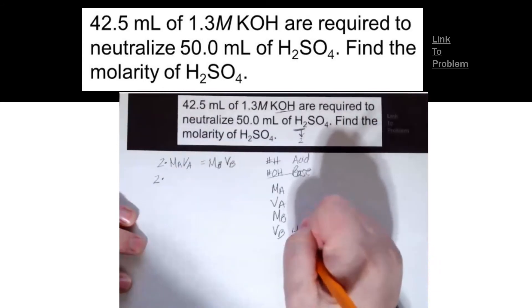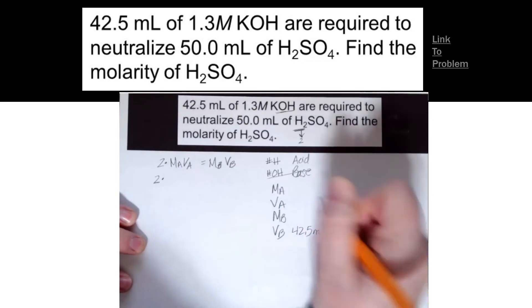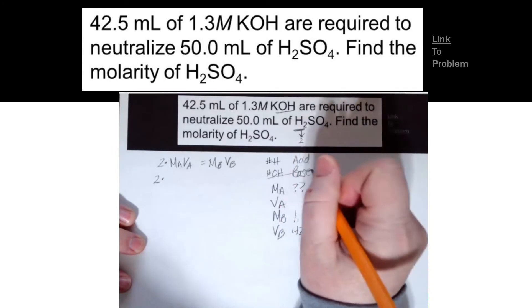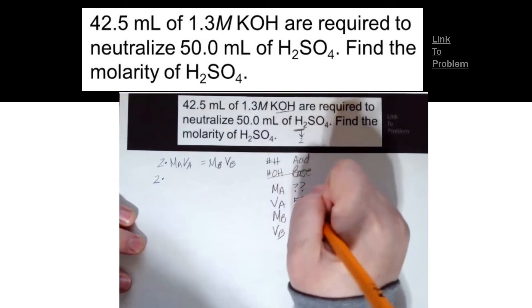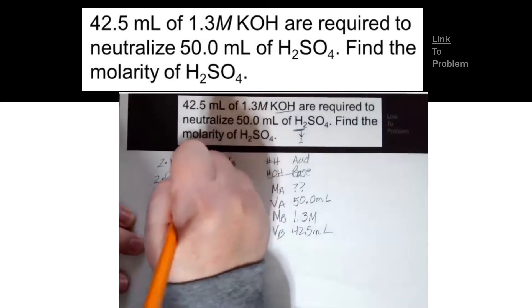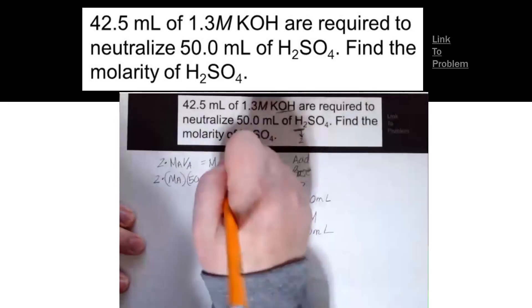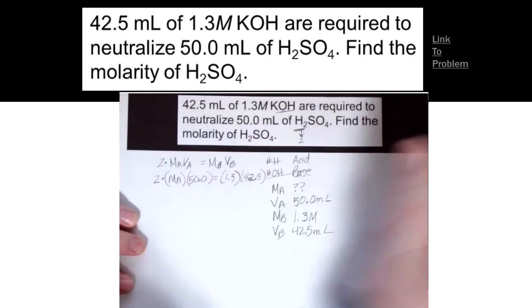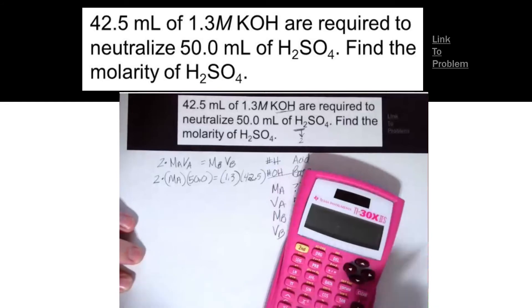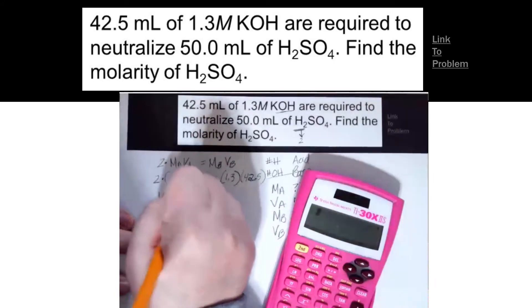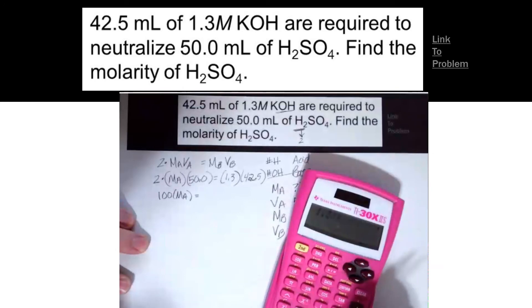So 42.5 is volume of my base, molarity of my base, molarity of my acid is what I'm trying to find. And volume of my acid, 50.0 milliliters. So MA is what I'm trying to find. VA 50.0 equals 1.3 times 42.5. So let's do a little bit of simplifying on both sides. 50 times two is 100. So 100 MA equals 1.3 times 42.5. What does that equal? 55.25.